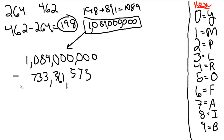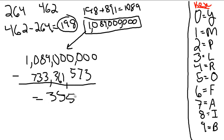And that entire thing is going to equal: 3, 5, 5, 6, 3, 8, 4, 2, 7. It's an awful 7.